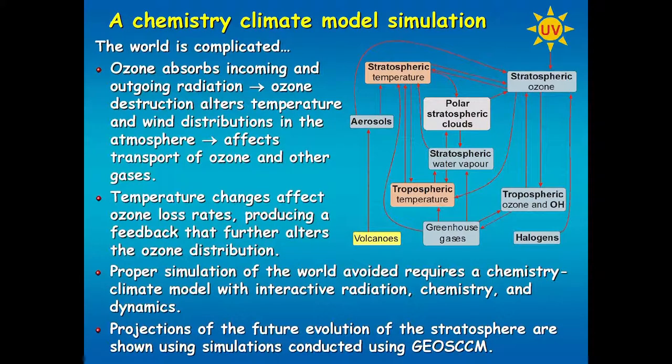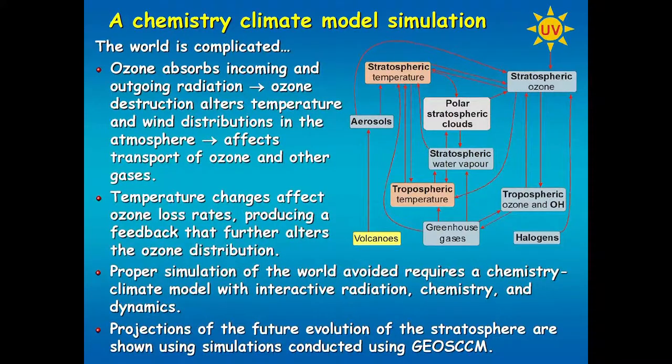Let me tell you a little bit about these chemistry climate model simulations. The world is complicated — and it's complicated also in the stratosphere. This schematic shows all the different connections between things like stratospheric ozone, stratospheric temperature, tropospheric temperature, greenhouse gases, and halogens that Paul just talked about. There are a lot of different interactions here, and if you want to simulate what the ozone layer is going to be doing over the coming decades, your model has to capture all these interconnections and complexity. To do that, you develop something called a chemistry climate model.